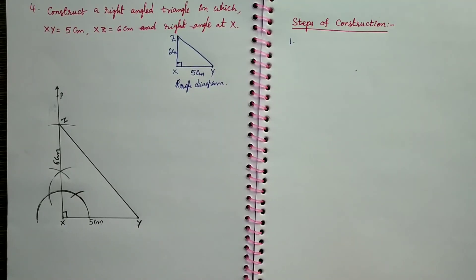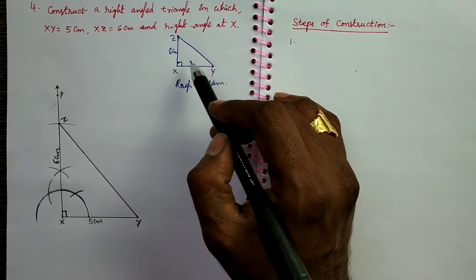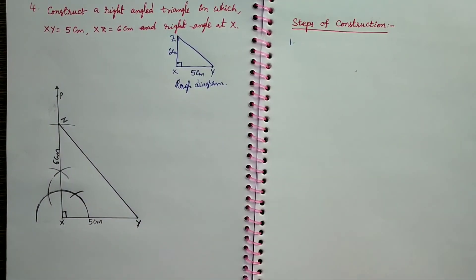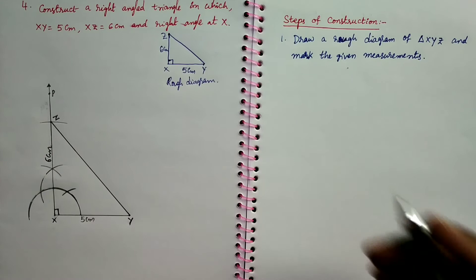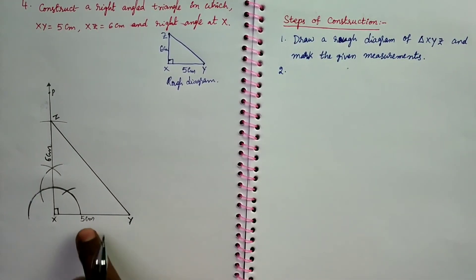Next, steps of construction. Step 1 is: Draw a rough diagram of given triangle XYZ and mark the given measurements. Second step is: Draw a line segment XY equal to 5 cm.